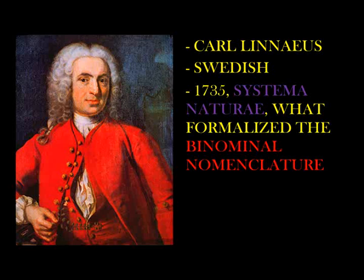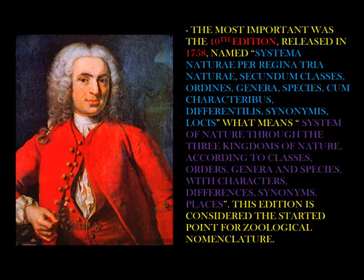Finally, in 1735, the Swedish Karl Linnaeus published the first part of Systema Naturae, which formalized binomial nomenclature for science. All the work was released until 1793. The most important was the 10th edition, released in 1758, of the Systema Naturae — meaning 'System of Nature through the three kingdoms of nature, according to classes, orders, genera and species, with characters, differences, synonyms, places.' This edition is considered the starting point for zoological nomenclature.